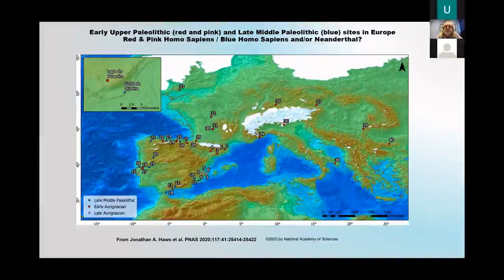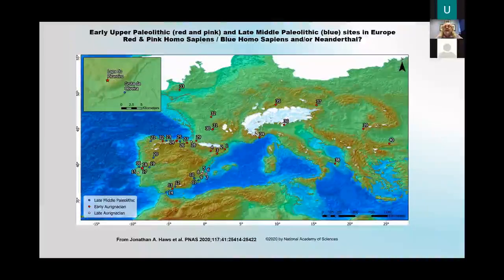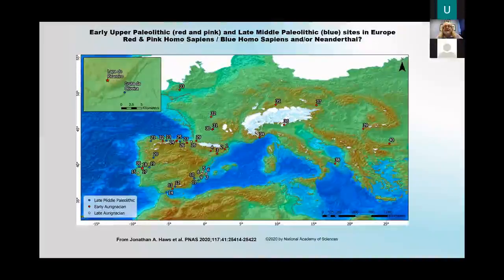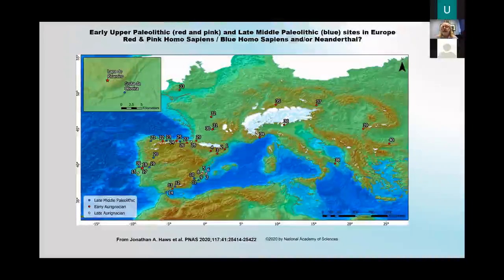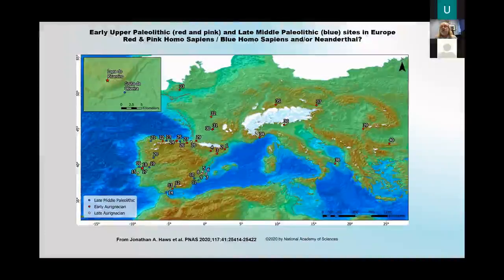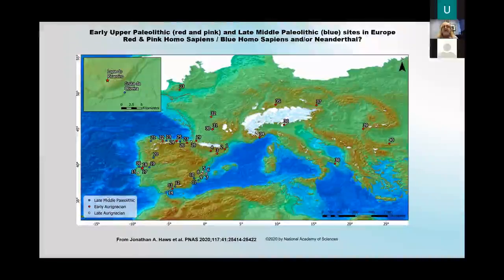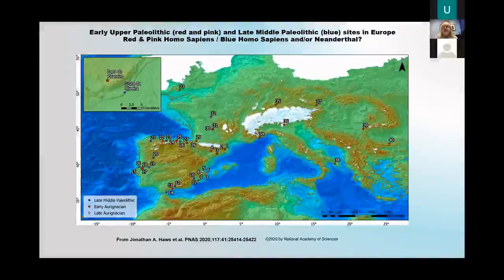Looking across Eurasia, you can find quite a lot of sites that seem to be linked to each other. The earlier Upper Paleolithic sites are the red and pink ones; the blue ones are the later middle, earlier Paleolithic sites. The red ones are taken to be Homo sapiens — modern ones. The blue ones may be Homo sapiens, but some people have suggested they could be Neanderthal. There have been findings of Neanderthals using some sort of paint and expression, raising the question of how much the two species interacted with each other.